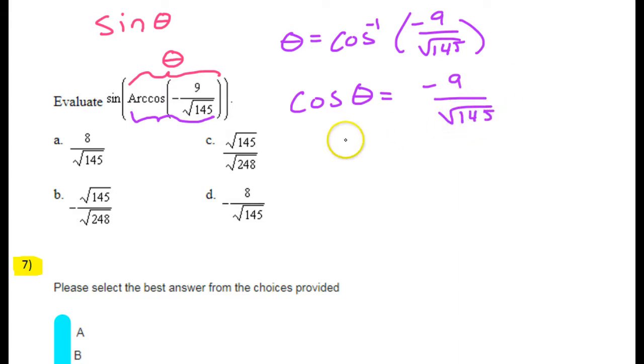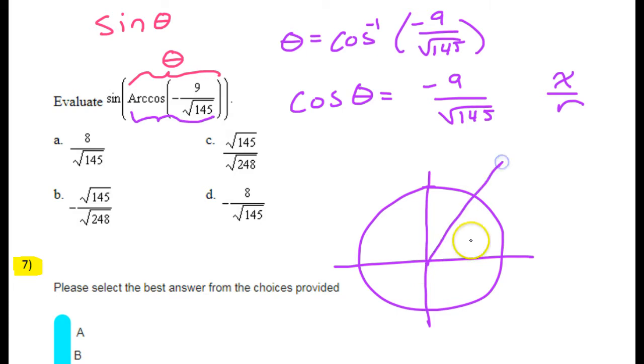This helps us because we know that on the unit circle, cosine is defined as x over r. I mean I say the unit circle, it doesn't really have to be a unit circle for this to work. But just in general, if you have an angle like this, like if this is theta,